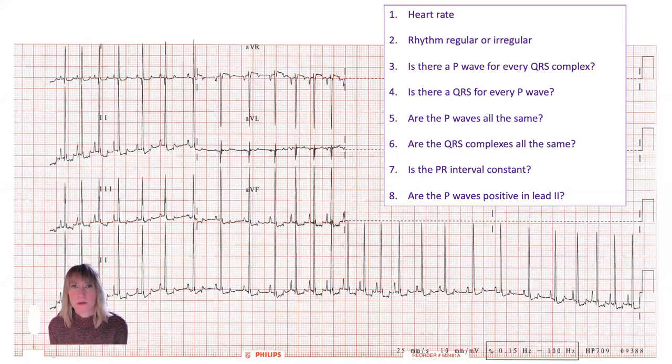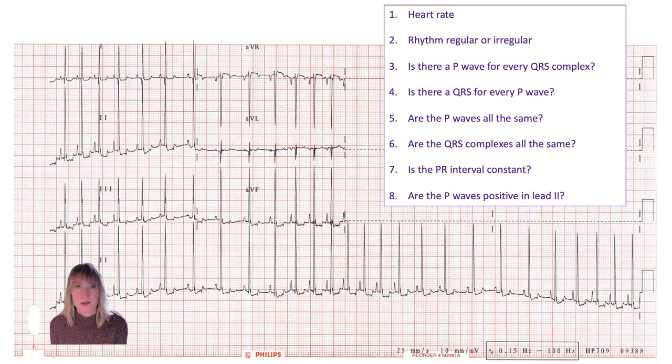Just to review our steps, we're going to think about heart rate, rhythm, we're going to search for P's and QRSs and the association between those, and we're going to try to discern if some or all of this is a sinus rhythm.